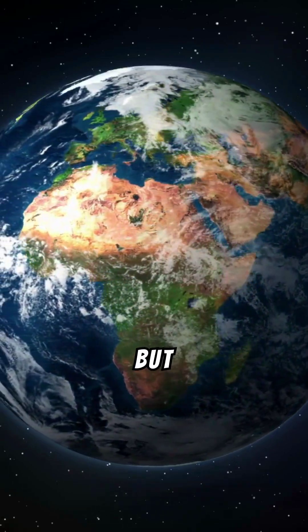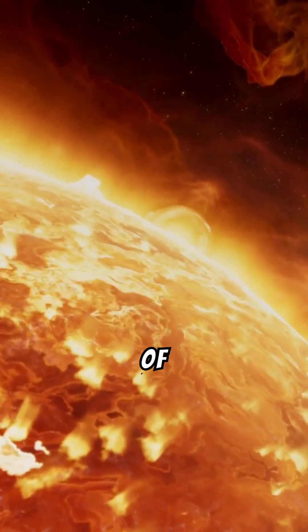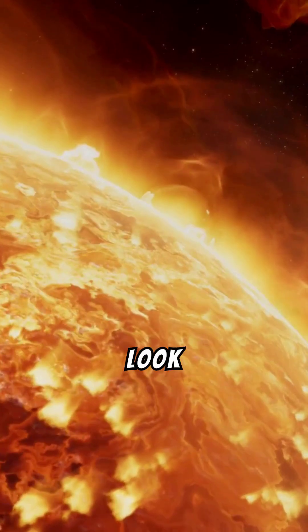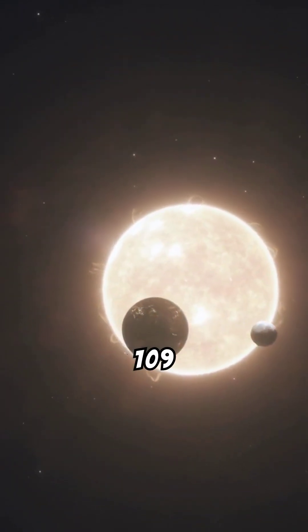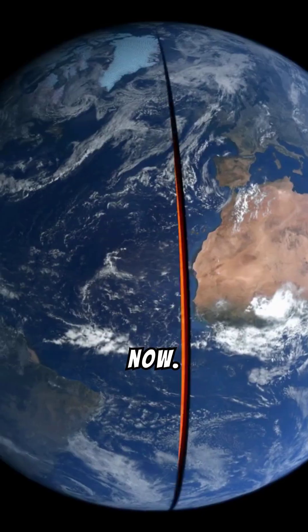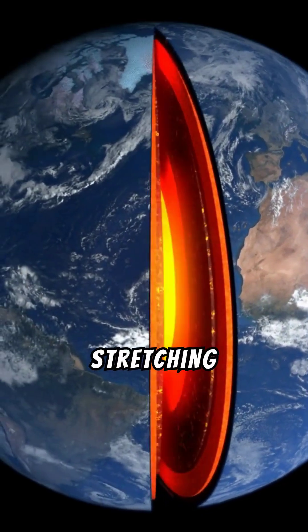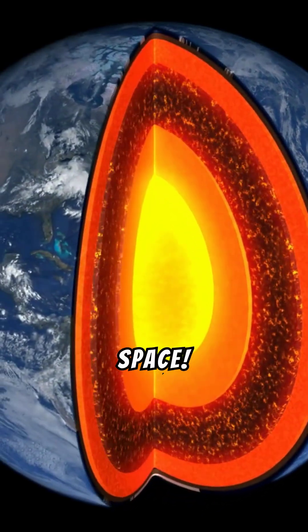Imagine this. Earth, but huge. I'm talking the size of the Sun. What would that even look like? Well, first off, the planet would be about 109 times wider than it is now. That's like taking our Earth and stretching it to the size of a massive beach ball floating in space.